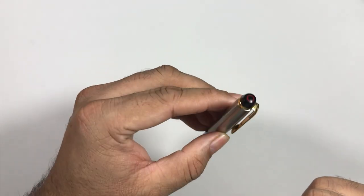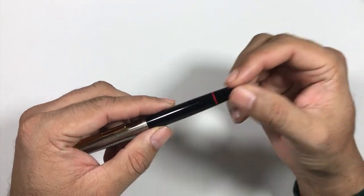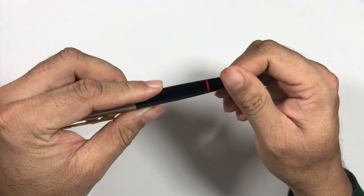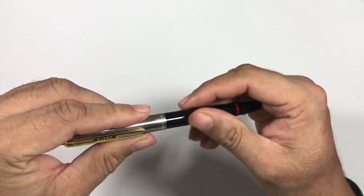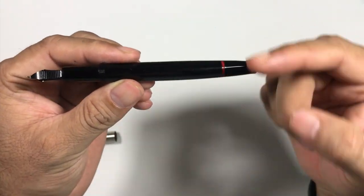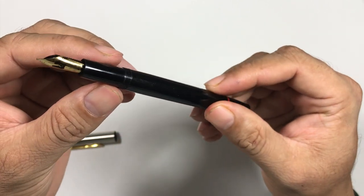You can see the pen barrel is very nice—it contains a red band around where the piston knob starts. This pen, as I said, is a piston filler.